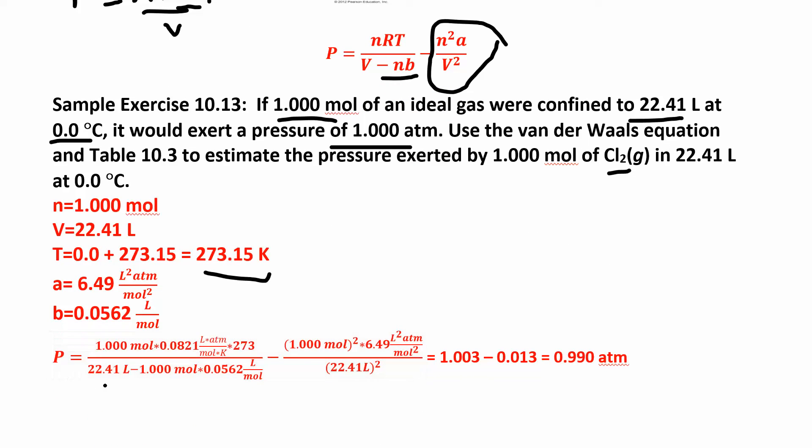I just plug it into this equation. I have nRT over V minus n times B, and then minus n squared times A over V squared. I'm just taking this equation and plugging in all of this stuff here, correcting for the actual pressure.